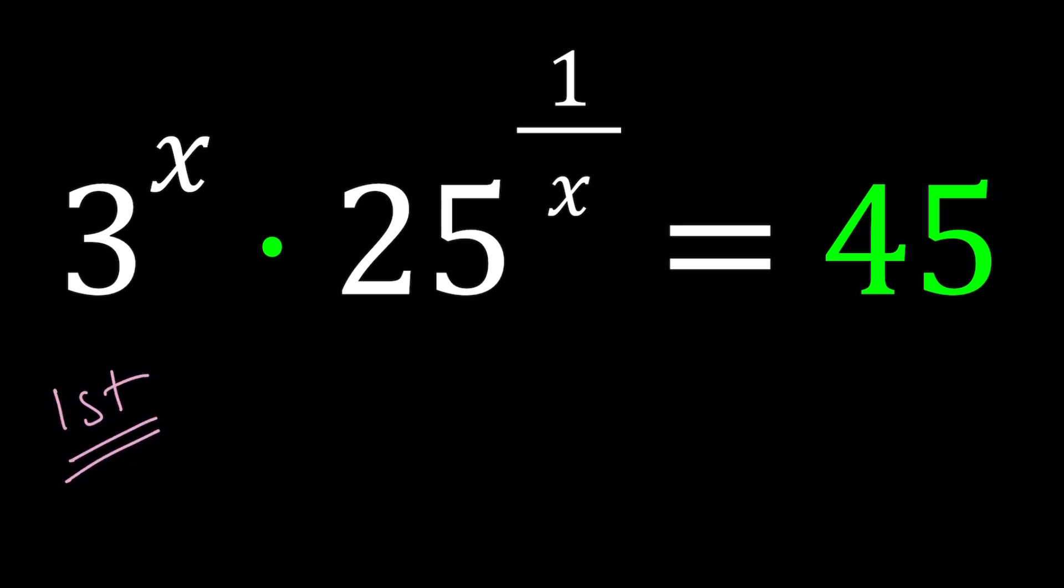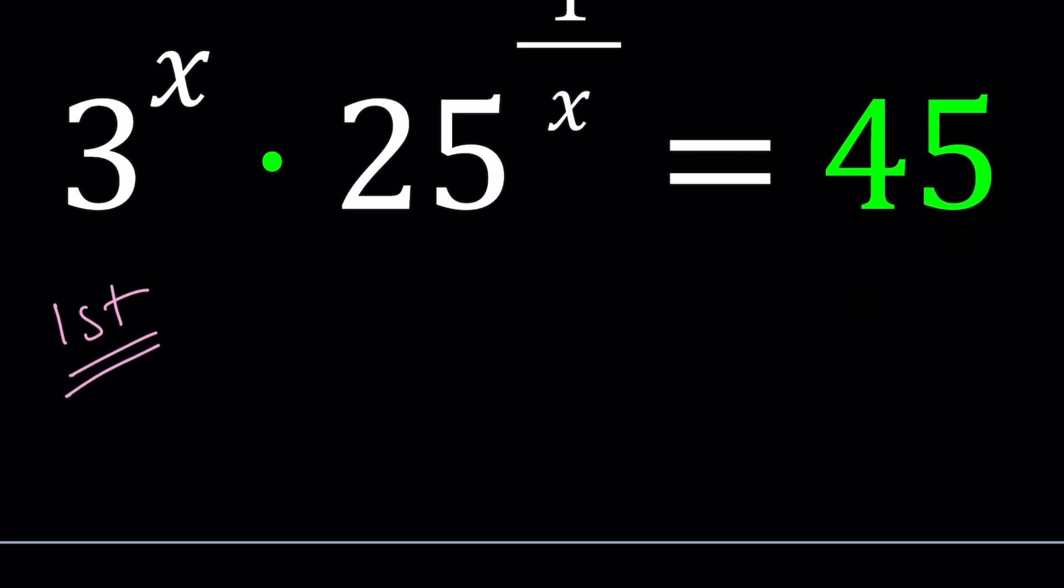Let's start with the first method. For my first method, I want to log both sides so I can bring all the powers down. Let's go ahead and do that. The choice of base is totally up to you because 3 and 25 are kind of unrelated. I can use base 10, base e like natural log, and so on. Let's go ahead and use log since 5 is part of 10.